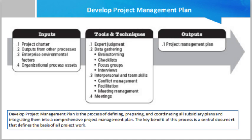Now that we have the inputs and tools and techniques, the next step is creating the plan and its components. The project management plan consists of 11 core components for executing, monitoring, and controlling. These include: the processes determined by the project management team, the implementation level of each process chosen, and the description of the tools and techniques to be used for accomplishing those processes.